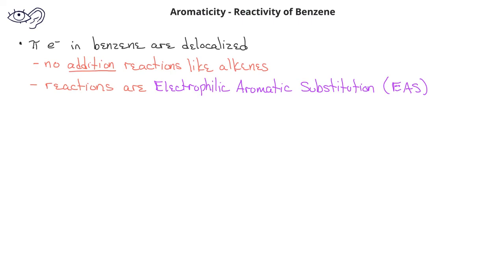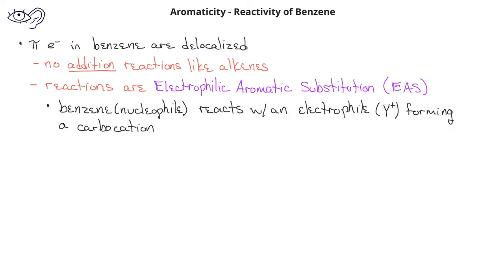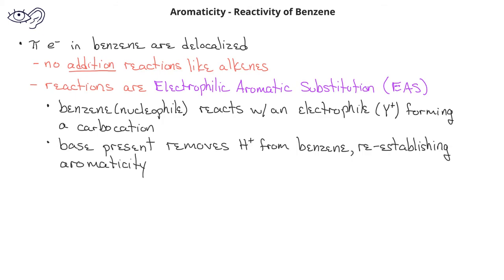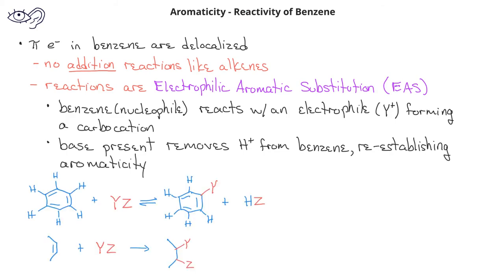In these EAS reactions, benzene, acting as a nucleophile, reacts with some electrophile, and this forms a carbocation. After the carbocation is formed, a base in the reaction removes one of the hydrogens from benzene, which reestablishes the benzene pi aromaticity. These reactions are called substitution reactions because instead of adding two atoms across a double bond like in the addition reactions of alkenes, we are making a substitution of an electrophile Y for one of the hydrogens on the benzene ring.